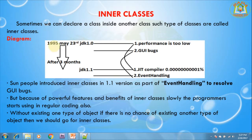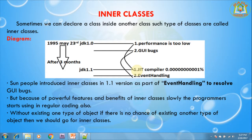In 1995, JDK 1.0 was released, but performance was very low and some GUI bugs were also present. After three months, JDK 1.1 was released. In that release, some people introduced inner classes as a part of event handling to resolve the GUI bugs.